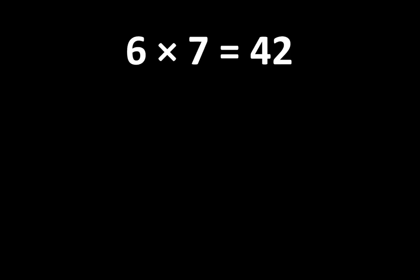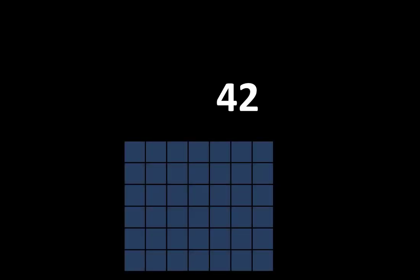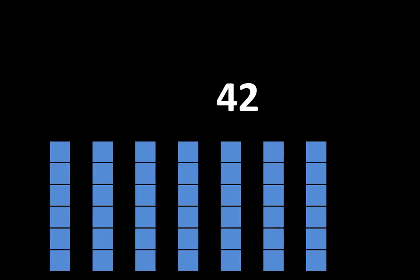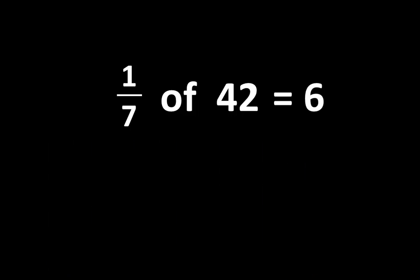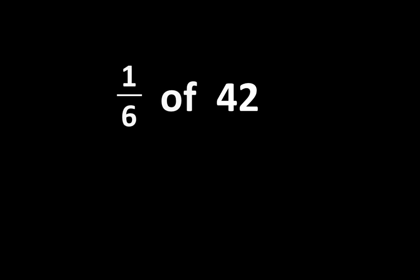6 times 7 is equal to 42, and there are many important ideas related to the number 42. If we divided 42 into 7 equal parts, each part would be one seventh of 42, and one seventh of 42 is equal to 6. At the same time, if we divided 42 into 6 equal parts, each part would be one sixth of 42, and one sixth of 42 is equal to 7.